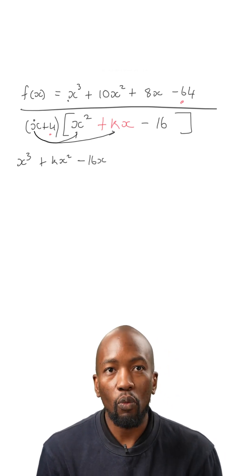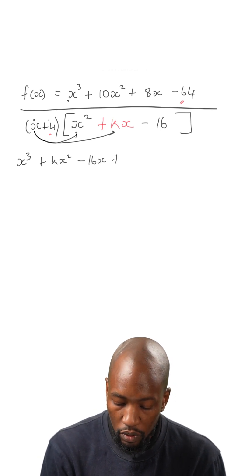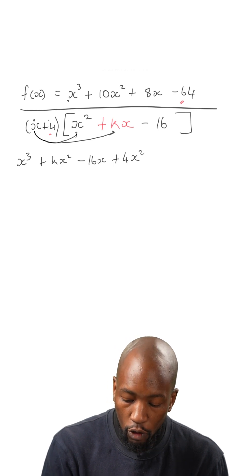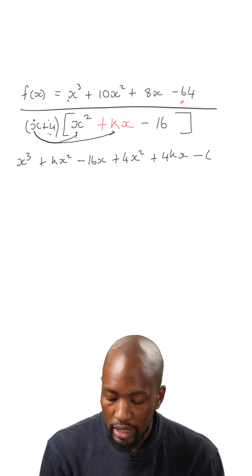Then I need to multiply with the 4. So 4 multiplied by x squared, that will give us 4x squared. Then 4 multiplied by kx, that gives us plus 4kx. Then 4 multiplied by negative 16 gives us minus 64.